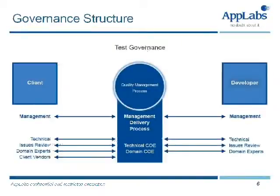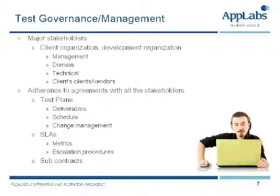Then there's the challenge of how you govern the whole process — how you manage it. If you look at the QA partner you're working with as the center of the quality management process, you have two major organizations: the developer organization that built the trading application, and the client organization — your stock exchange. You look at governance by identifying the stakeholders of both the client organization and the development organization.